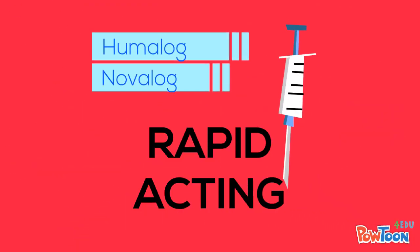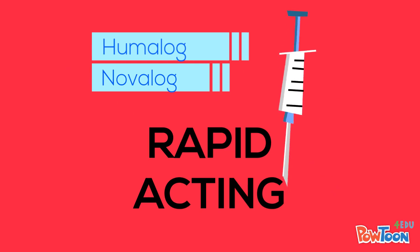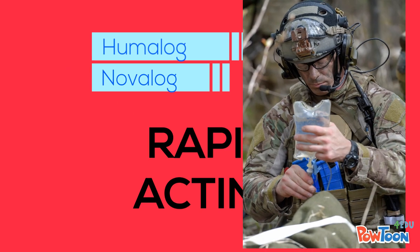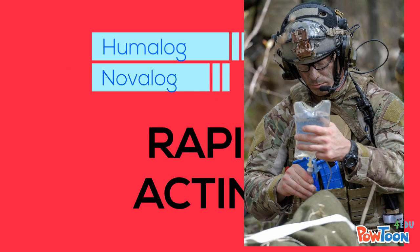Here we have rapid acting insulin, which is Humalog and Novolog. It's easy to remember because they have 'log' in their names. This is what you use for emergency situations when somebody needs insulin really badly, usually when they have hyperglycemia — that's too much sugar.